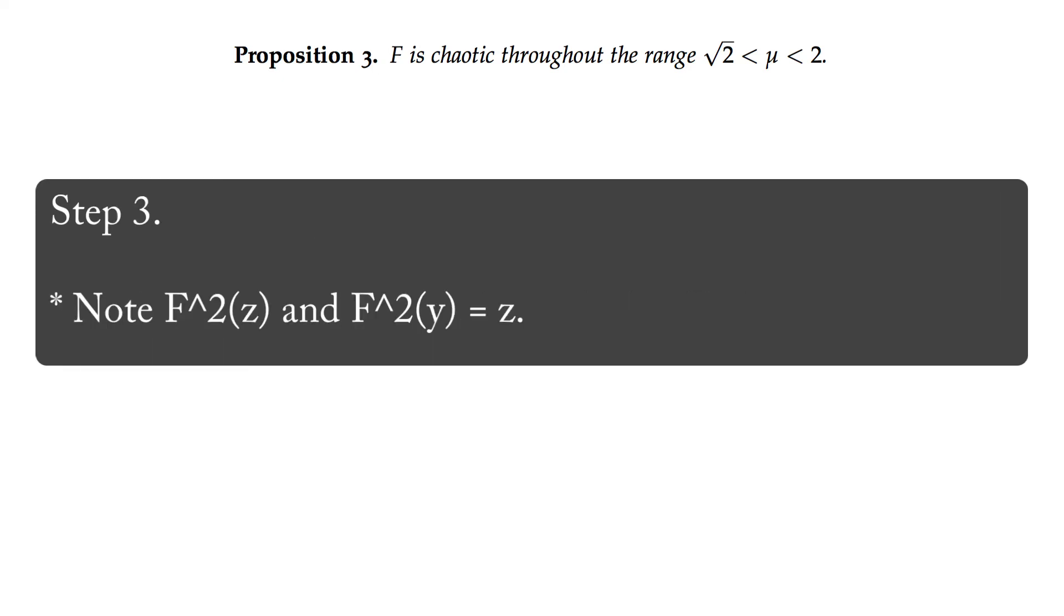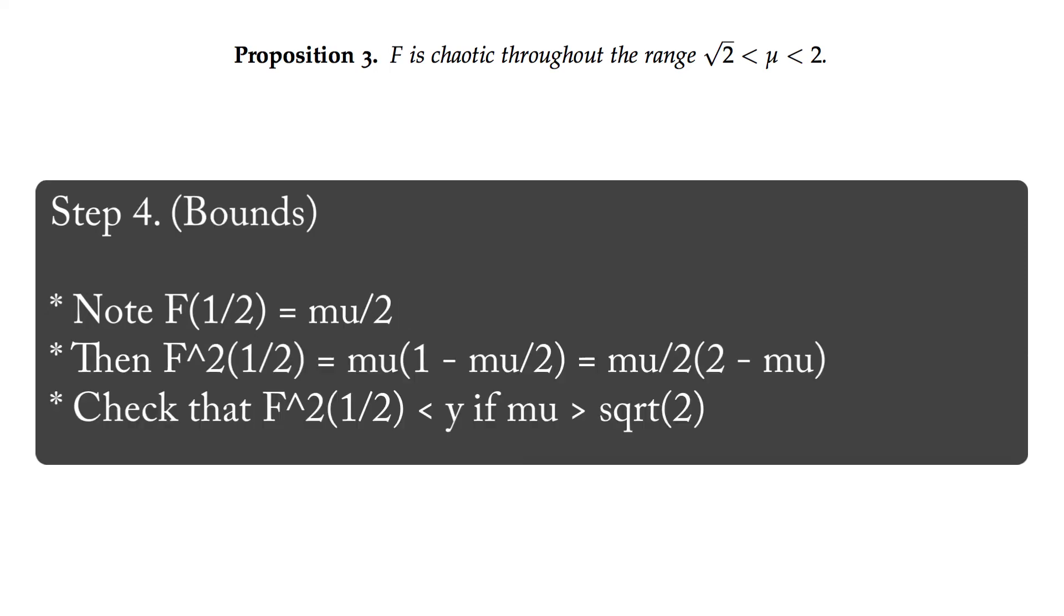Step 3: By construction, notice that f squared of z is equal to z, and f squared of y is equal to z. Step 4: f squared of 1 half is equal to mu times 1 minus mu over 2 by the map, which is equal to mu over 2 times 2 minus mu. This point is less than y if mu squared is greater than 2 or mu is greater than root 2.